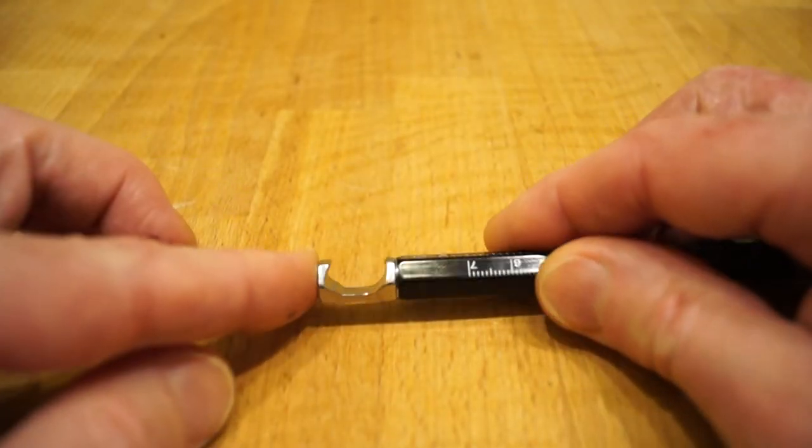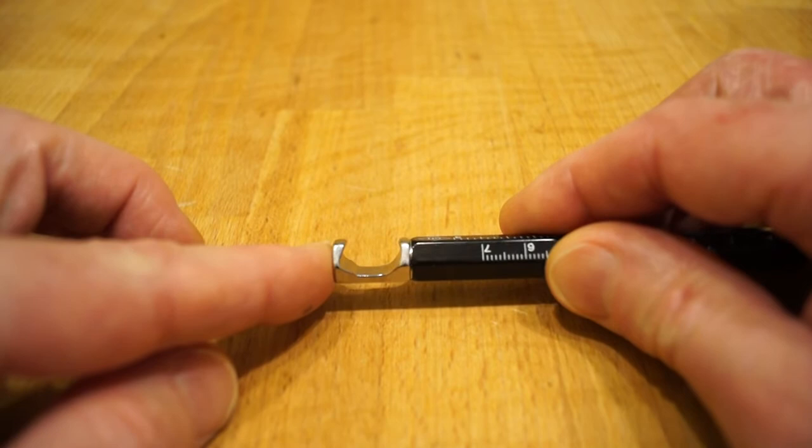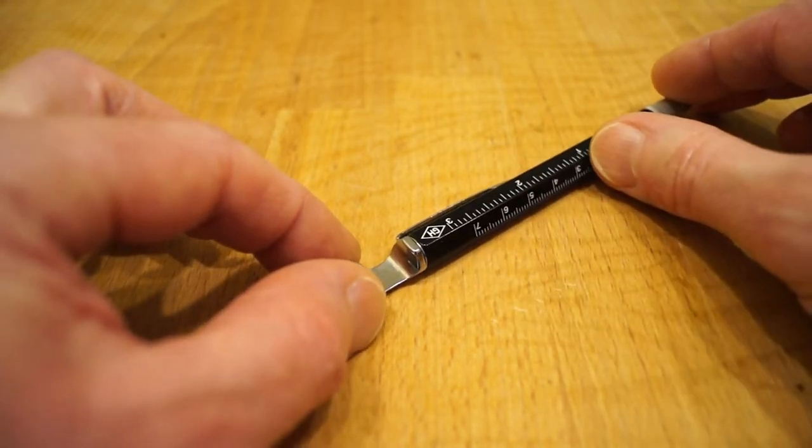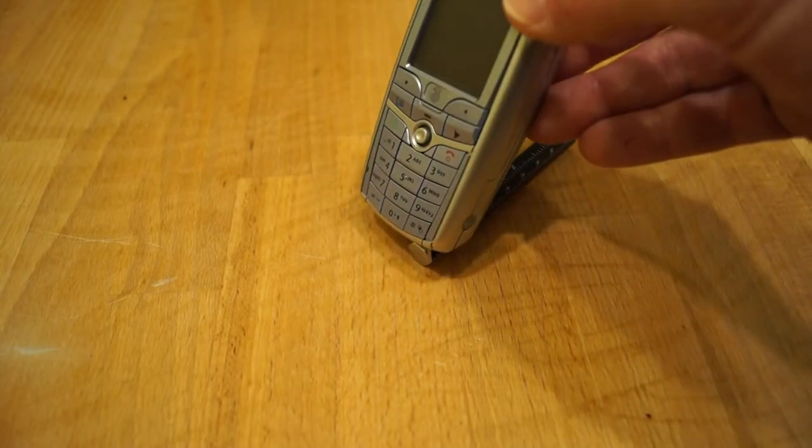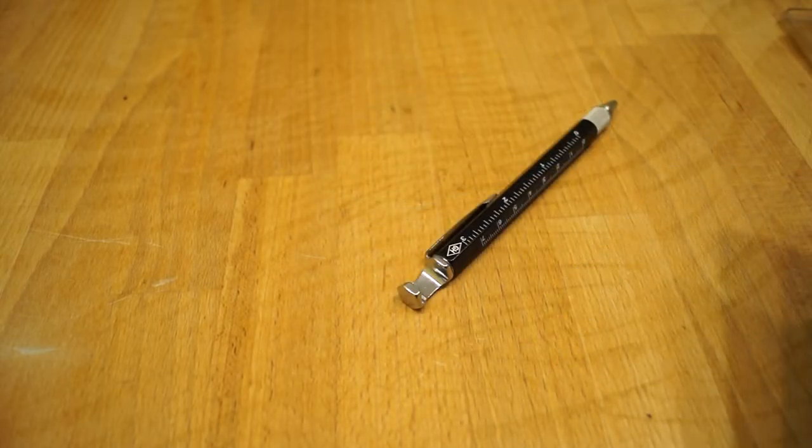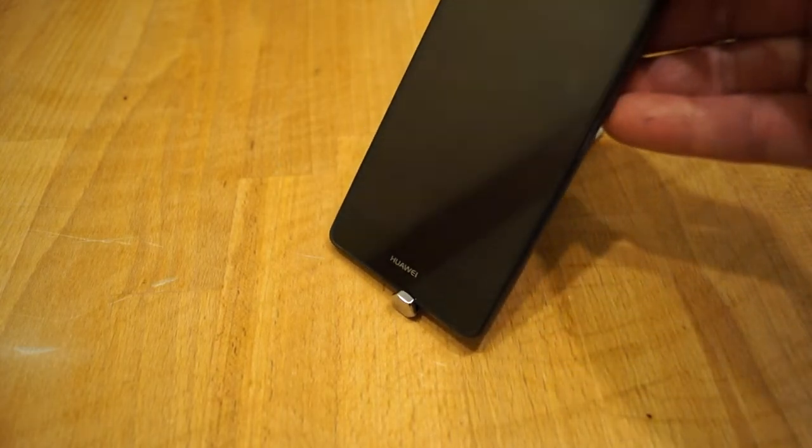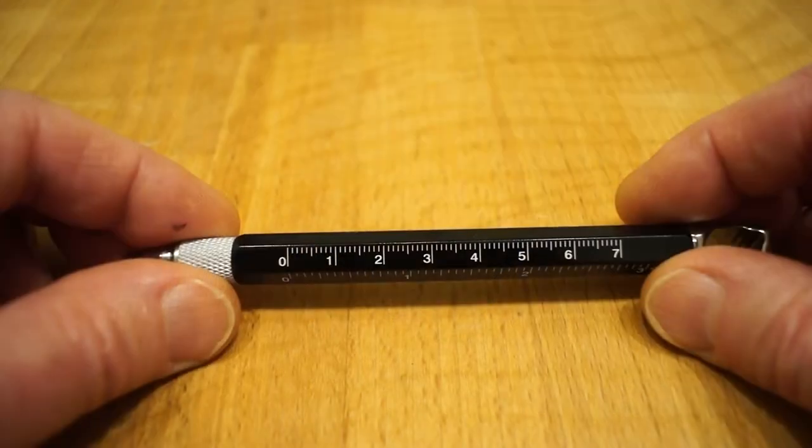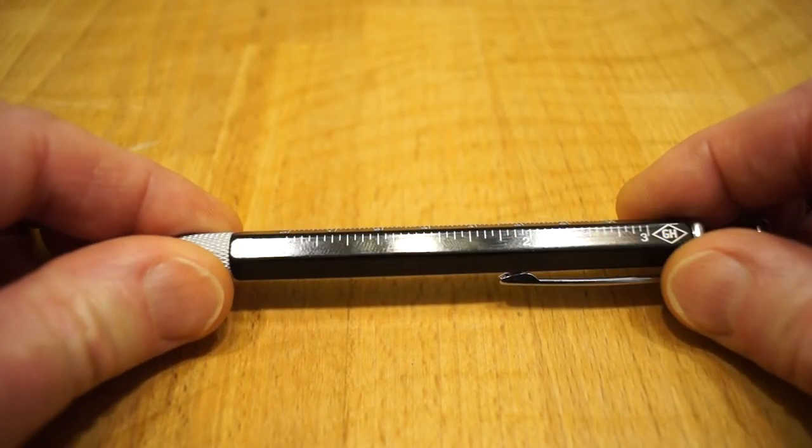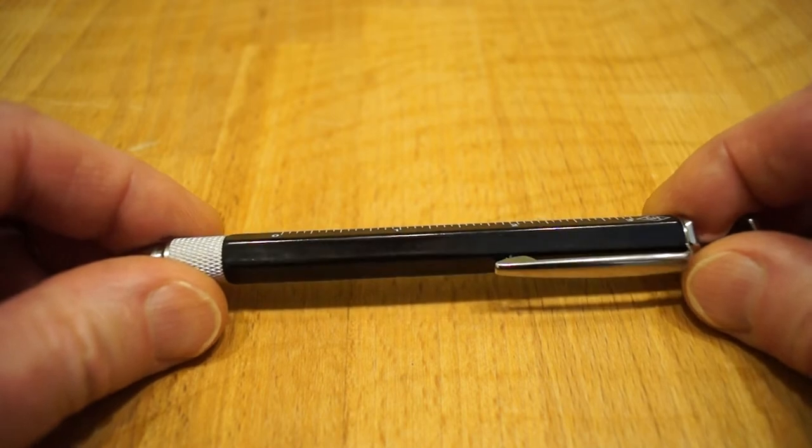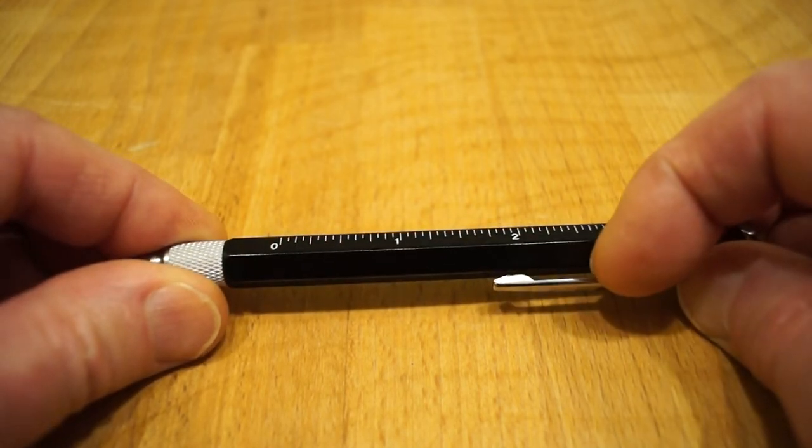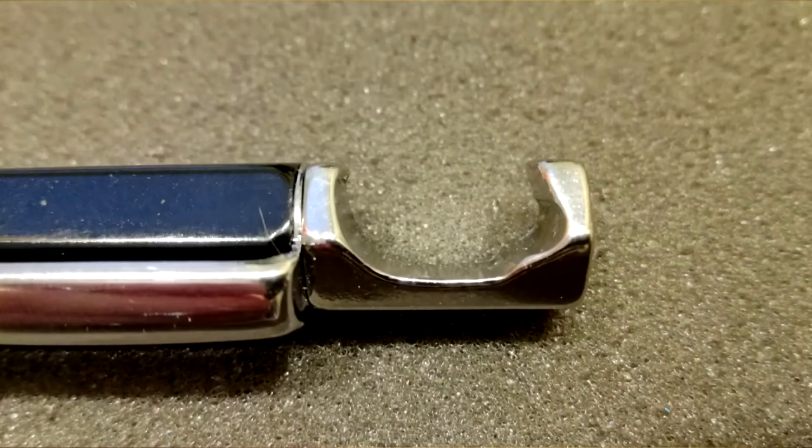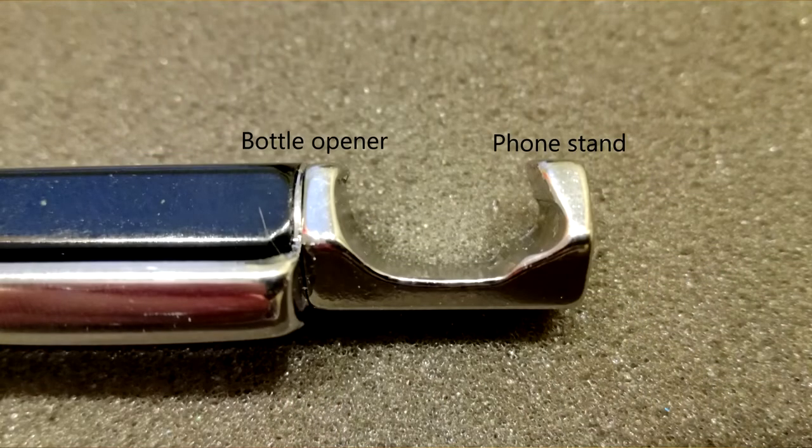At this end we have the bottle opener and mobile phone stand. Let's try the mobile phone stand out first. Let's give my Huawei smartphone a go in there shall we? There's a little, there we go. So that's how it holds your phone up. We have both metric and imperial rulers on the tool pen. Quite a strong little pocket clip. So it should hold into your pocket quite nicely.